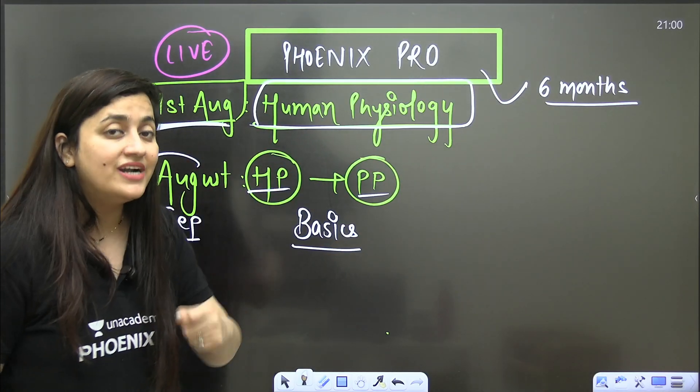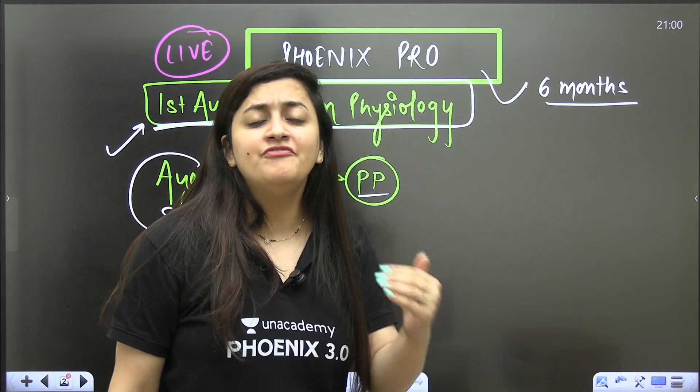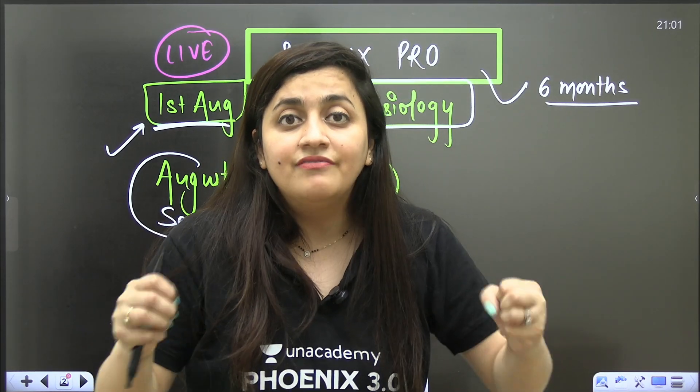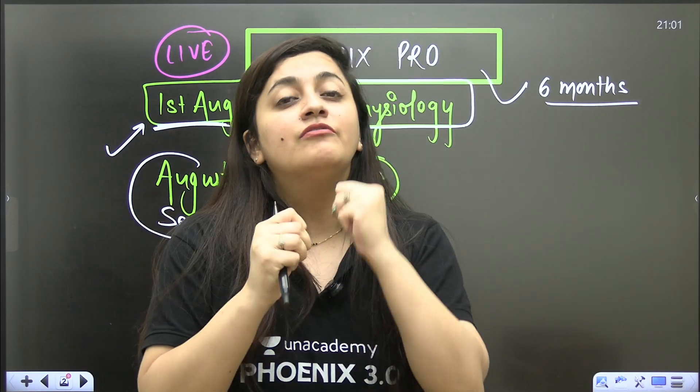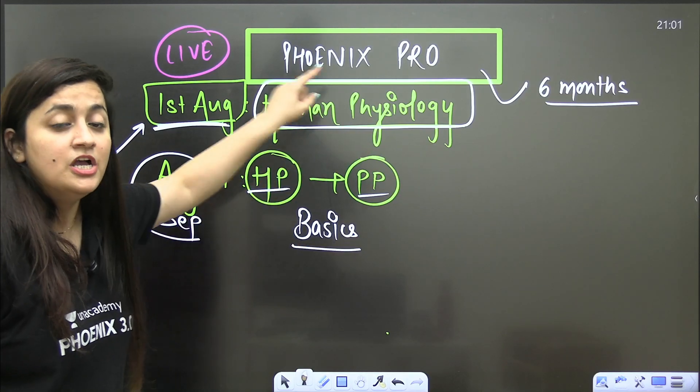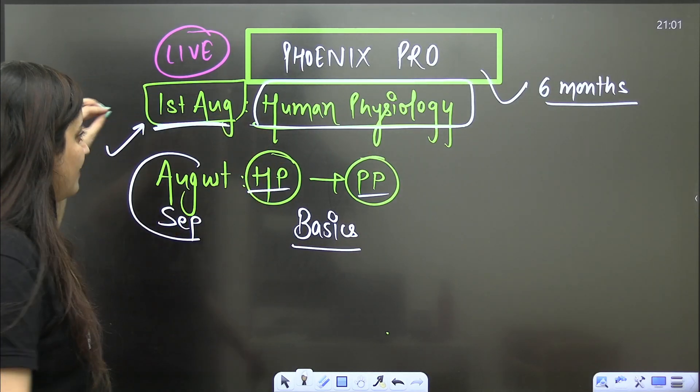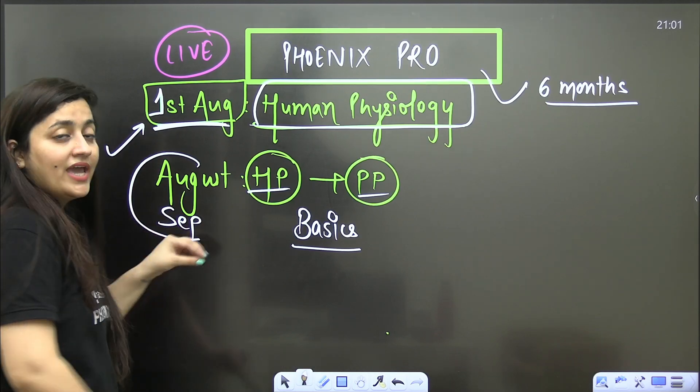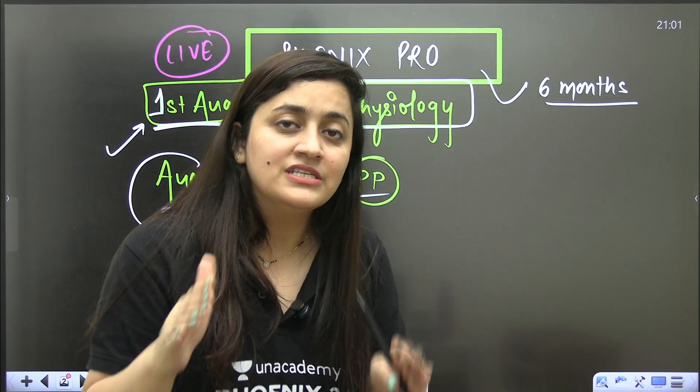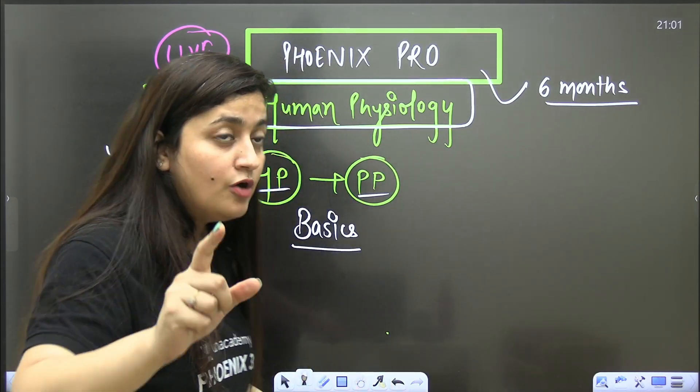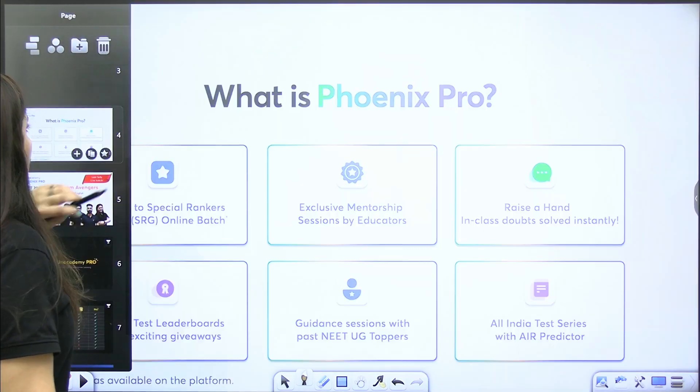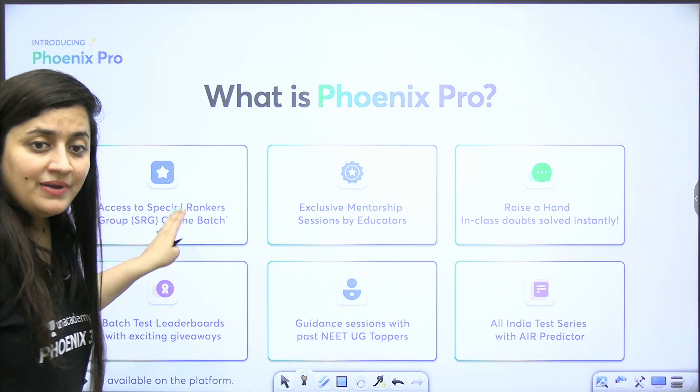After within 15 days you will have the test also. We will discuss that test, so in that way you will decode NCERT and you will have a very good command over your syllabus. Without wasting your time, join in this Phoenix Pro batch now. I have just started with one class, so if you will enroll today you are not going to get backlogs for physics, chemistry, and biology. You will get the proper classes. Without wasting any time, be the part of this particular batch where you are going to get many perks. You will be having the access of special rankers group, you will get mentorship sessions by the educators. In the class itself you can ask the doubt.